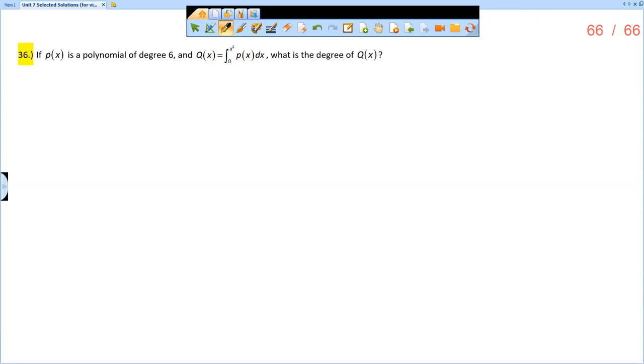This is the solution video for Unit 7 Review, question number 36. If P(x) is a polynomial of degree 6 and Q(x) is the definite integral from 0 to x² of P(x)dx, what is the degree of Q(x)?